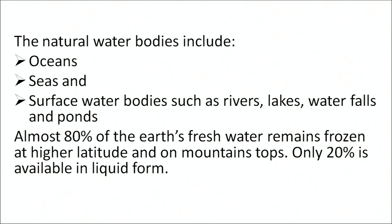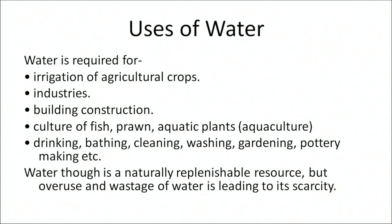Almost 80 percent of the earth's fresh water remains frozen at higher latitudes and on mountain tops. Only 20 percent is available in liquid form. The primary source of water on land is rainfall. The 20 percent of available fresh water on land is used for various purposes: irrigation of agricultural crops, industries, building construction, aquaculture such as fish, prawn, and aquatic plants, drinking, bathing, cleaning, washing, gardening, and pottery making. Water, though a naturally replenishable resource, is facing scarcity due to overuse and wastage.